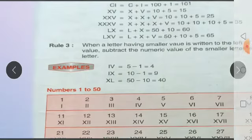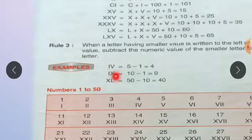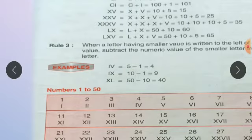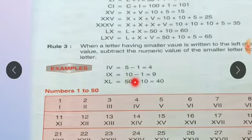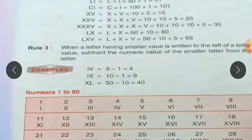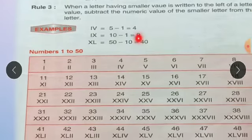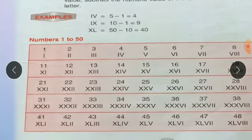I is a small number representing 1, and X represents 10. So IX: 10 minus 1 equals 9. And XL: L means 50 and X is 10, so the left side 10 is less than 50, giving 50 minus 10 equals 40. This is rule 3.